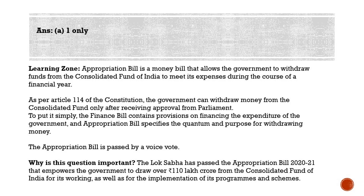The procedure is: the government introduces the Appropriation Bill in the lower house, Lok Sabha. After discussions on budget proposals and voting on demands for grants, the bill is first passed by Lok Sabha and then sent to Rajya Sabha. Rajya Sabha has authority to recommend amendments, but it is the privilege of Lok Sabha to either accept or reject those recommendations. An exclusive feature of the Appropriation Bill is its automatic repeal clause — the act repeals itself after fulfilling its statutory purpose. The bill can be passed by voice vote. If defeated, it would lead to resignation of the government or a general election, which has never happened in India.